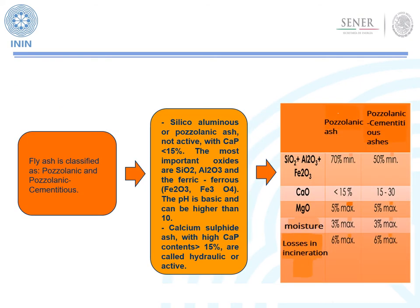Among the several ashes, the silicoaluminous or pozzolanic ash, also known as bituminous, is not active with calcium oxide at less than 50%. The most important oxides are silicon oxide, aluminum oxide, and ferric oxide. The pH is basic and can be higher than 10. Lignite sulfate ash has a high calcium oxide content greater than 15% and is called hydraulic or acid ash.